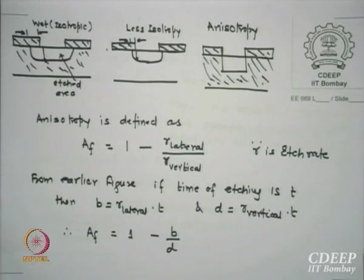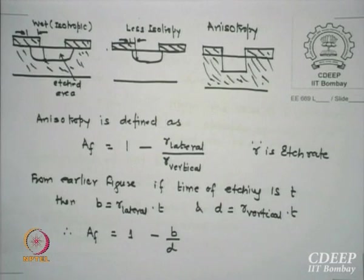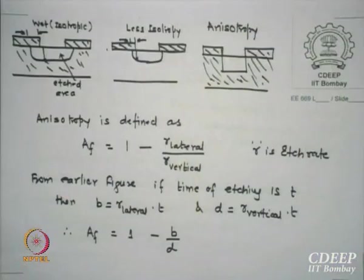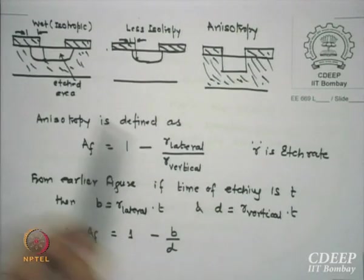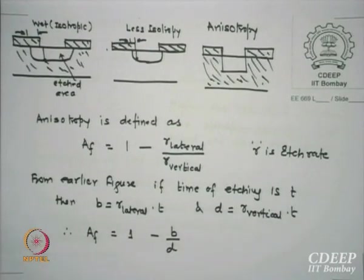If the etch rate of lateral is 0 — meaning nothing goes on the left or right side — then AF is 1. So for an ideal etch profile, AF should be 1. If lateral is positive and sufficiently close to vertical, AF can vary from 0 to 1. Smaller the AF, worse the dimension you are getting; larger the AF, better the dimensions match what the mask wanted. The proportional relationship is: etch rate times time equals distance B on the lateral side, and D is the depth of the film in the vertical direction times T.